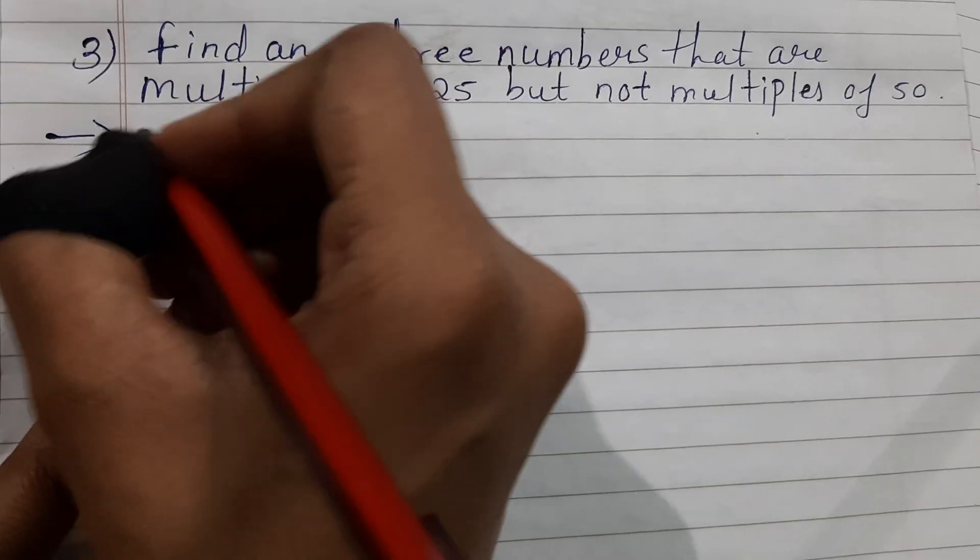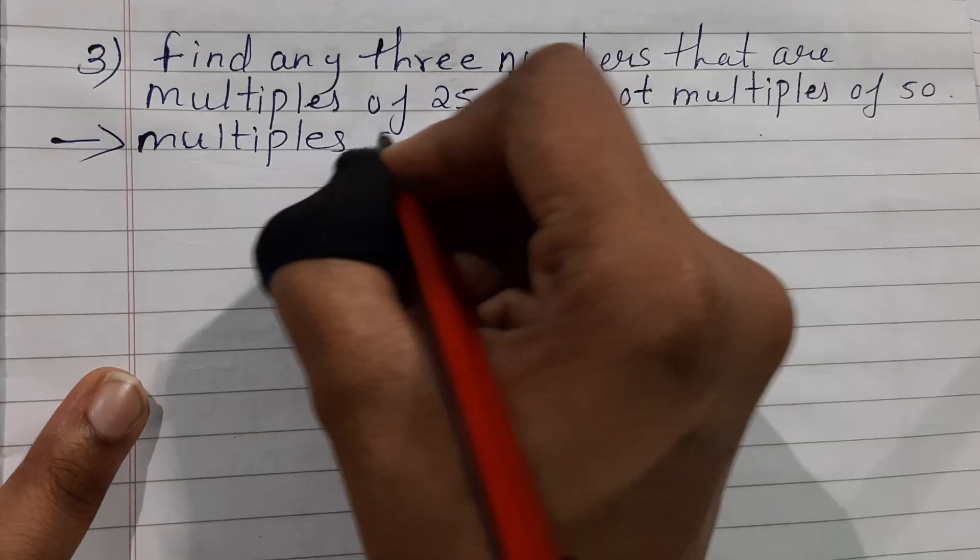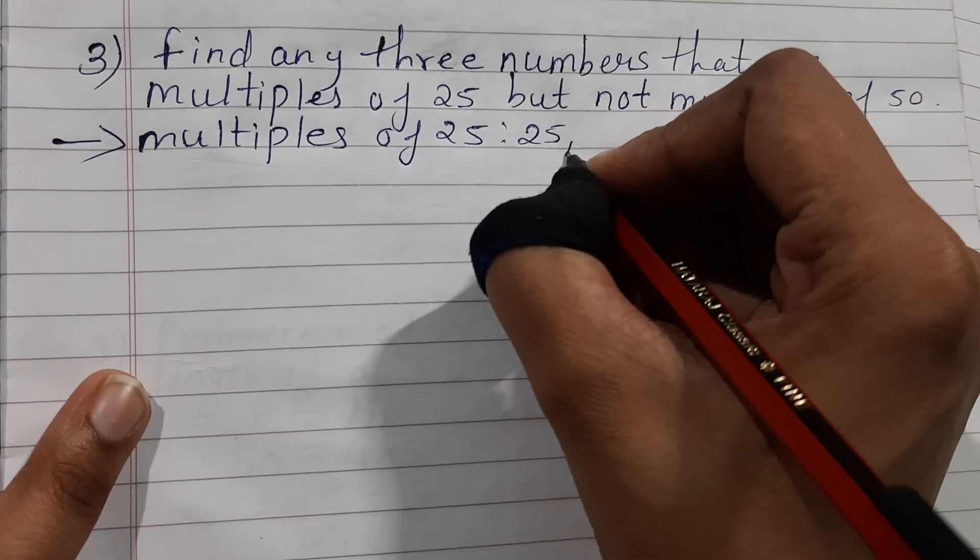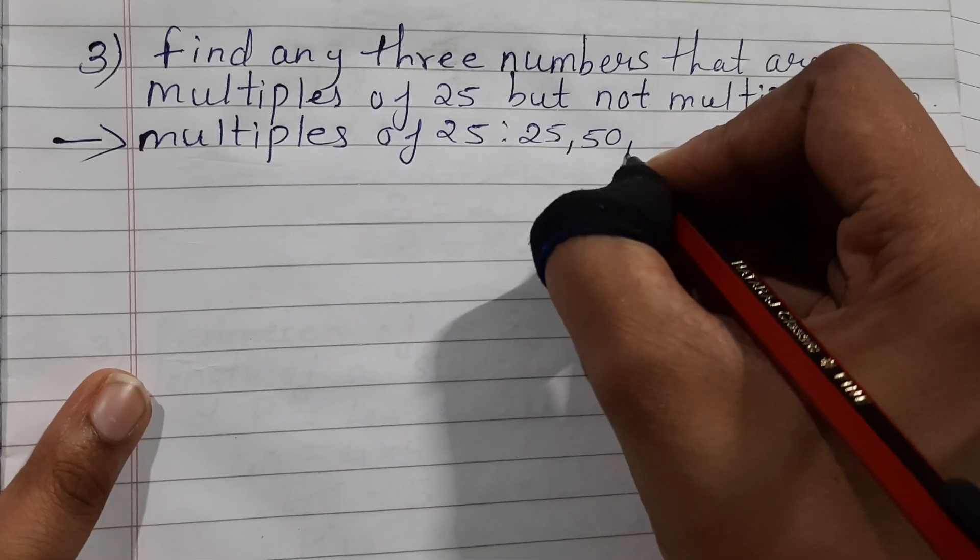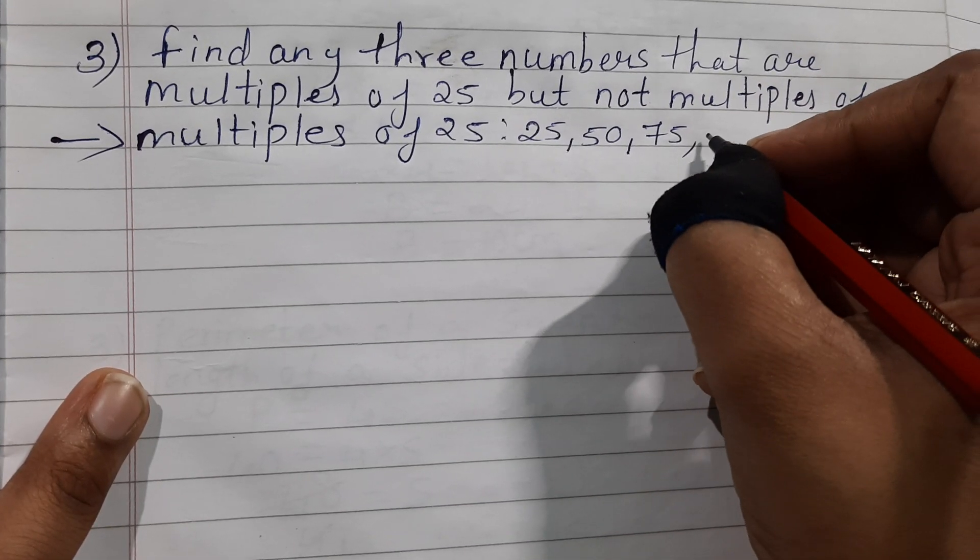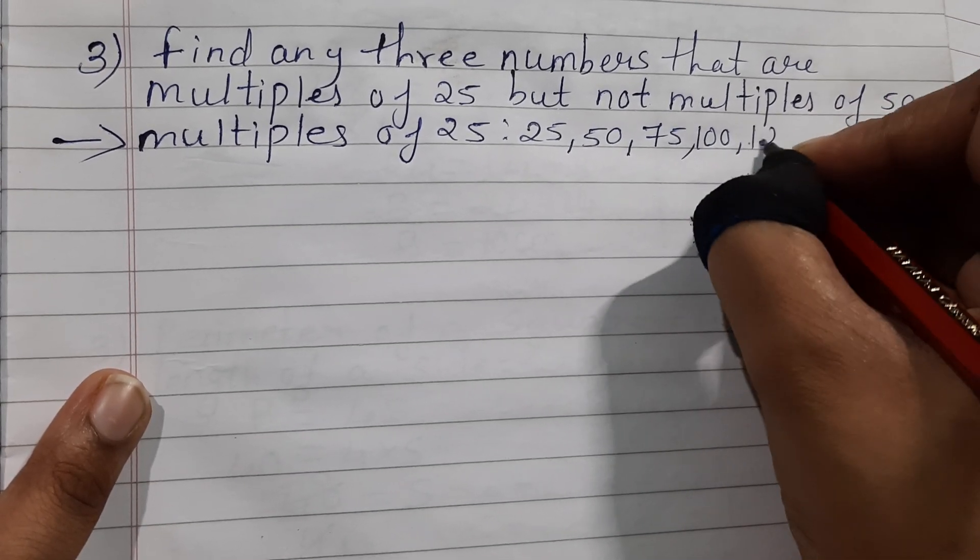First, let us write down the multiples of 25. 25 ones are 25, 25 twos are 50, 25 threes are 75, 25 fours are 100, and then 125.